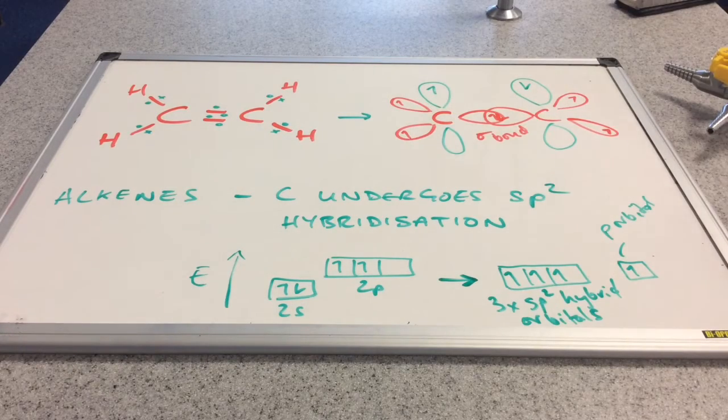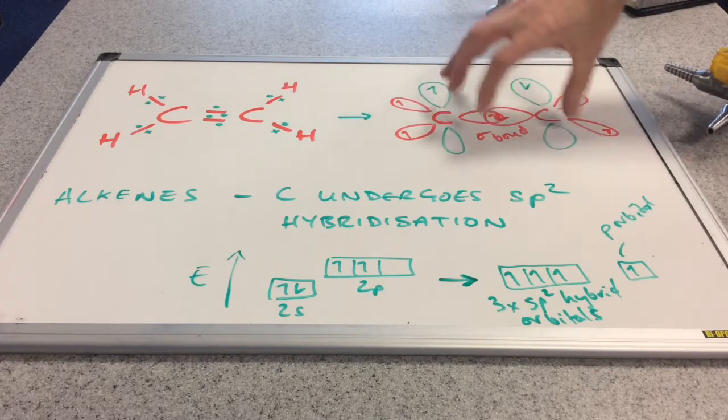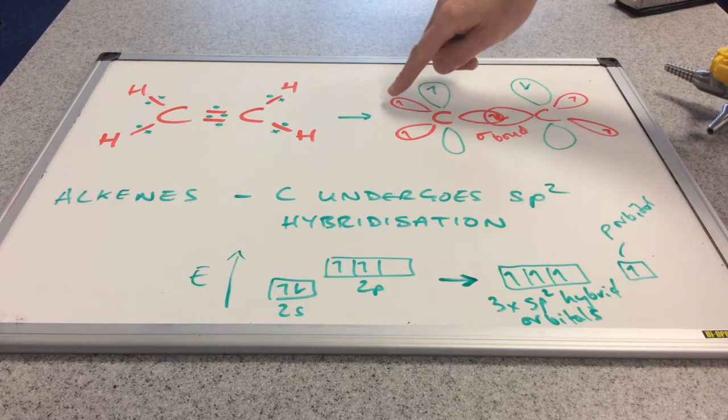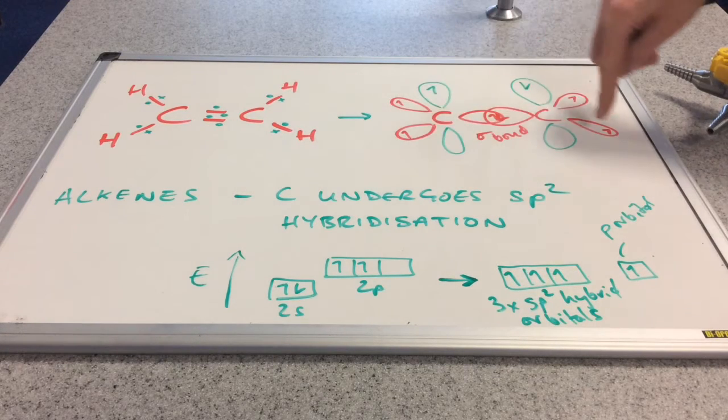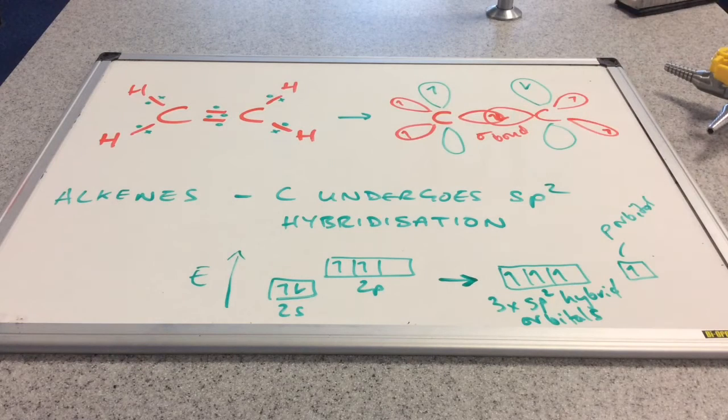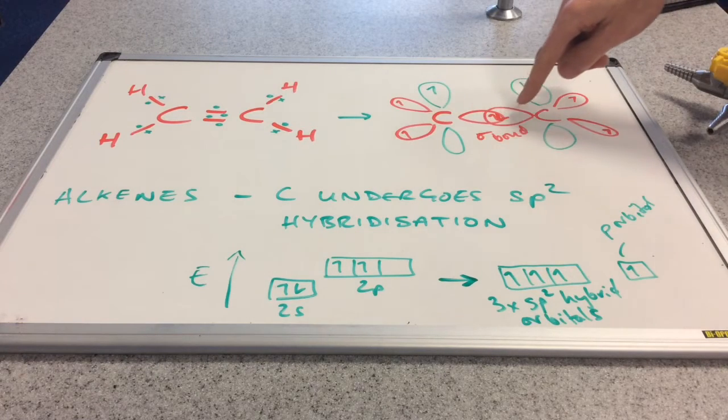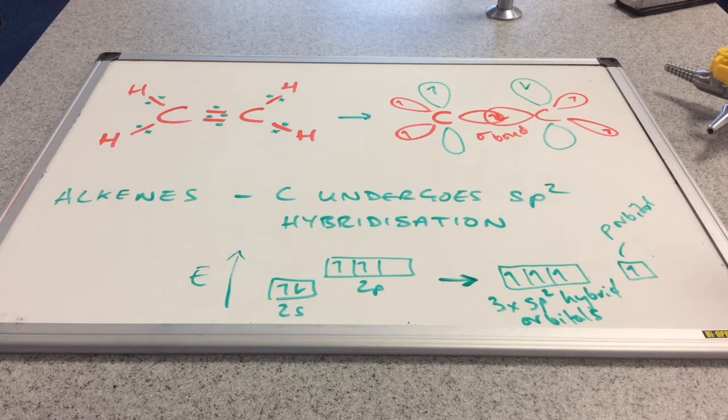Well the orbitals are overlapping end to end, and so that's a sigma bond. I'll just point out before I move on to what happens to the green p orbitals, obviously these electrons here in these sp² hybrid orbitals, they can do exactly the same thing there.